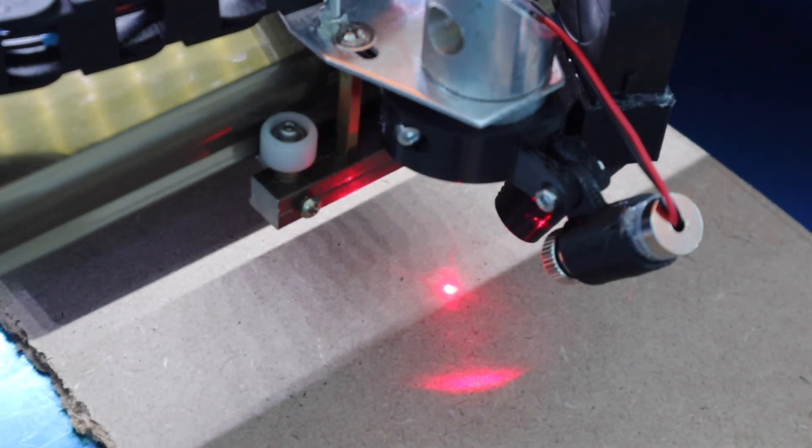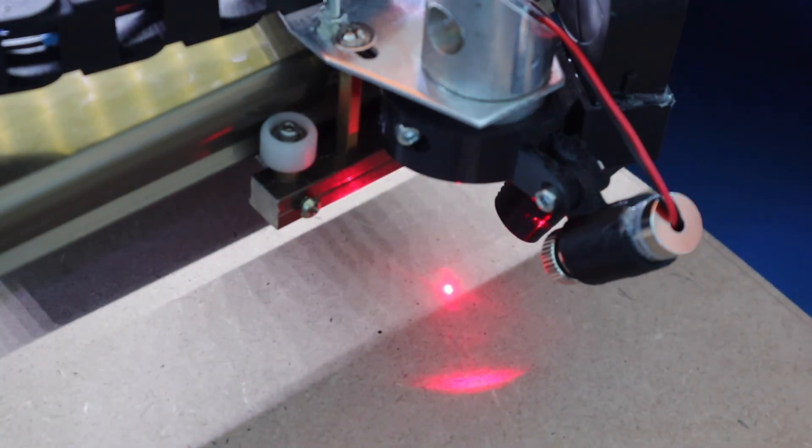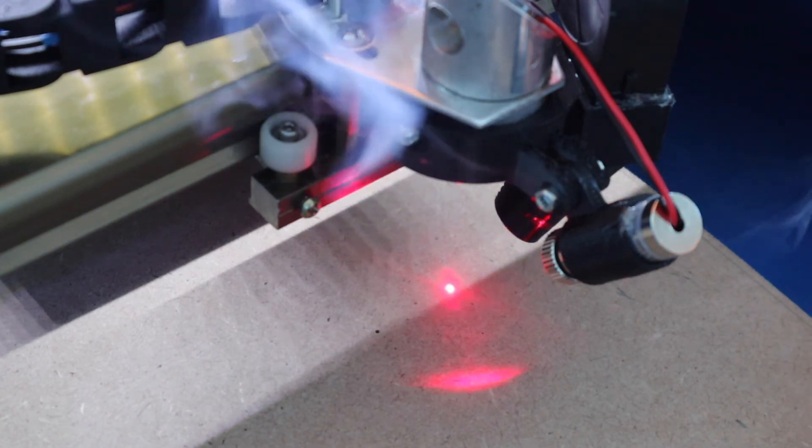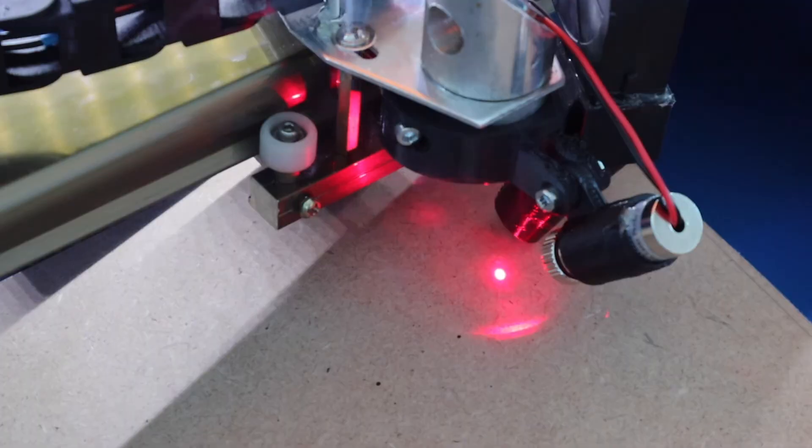Check the laser again and your pointer should be ready to use. Now you have an easy way to see exactly where your laser is going to cut, allowing you to position it accurately and avoid wasting material or overrunning the edges.